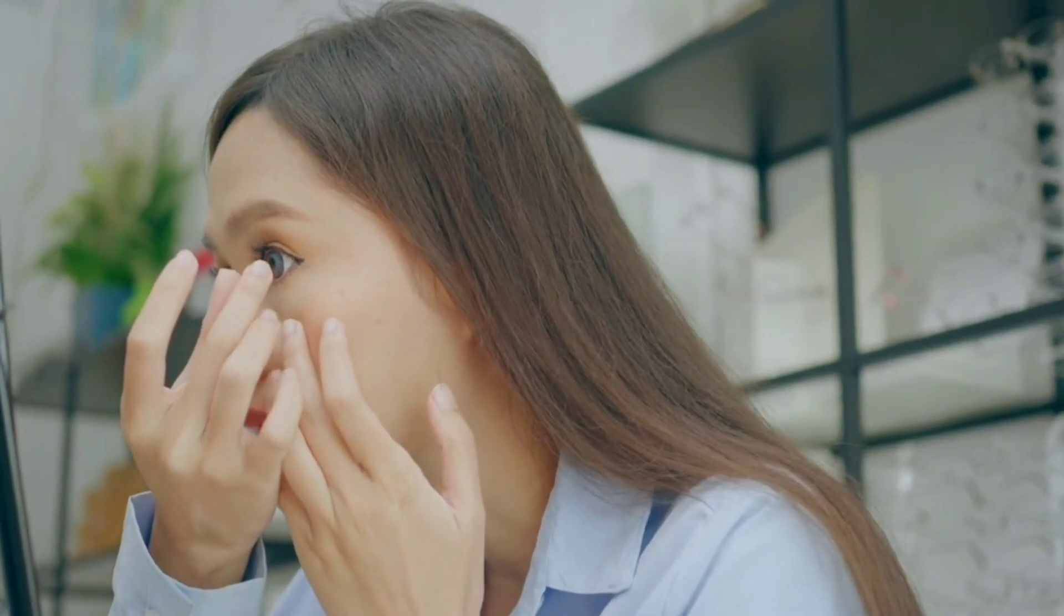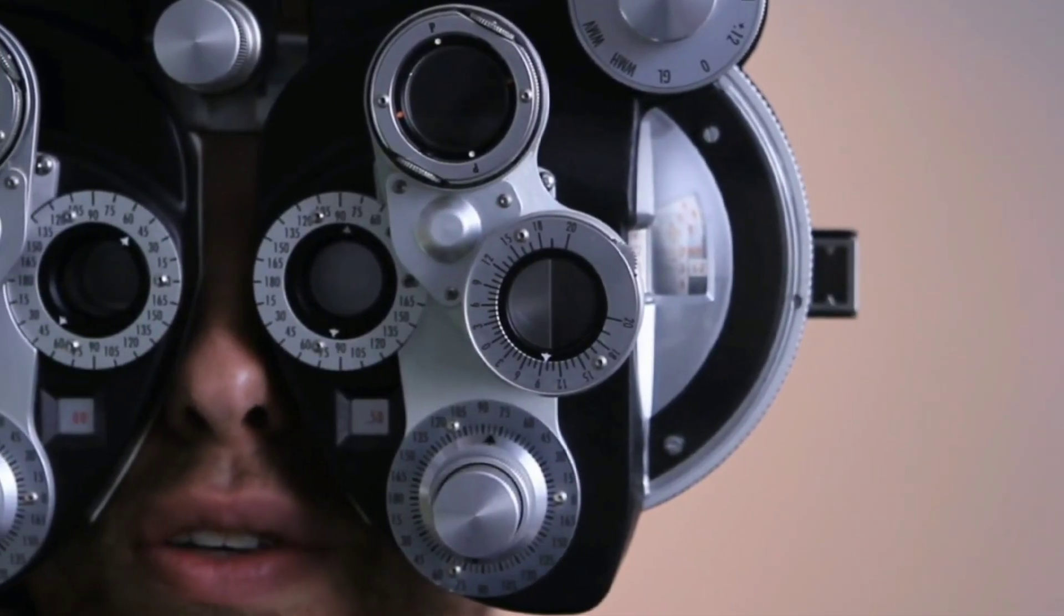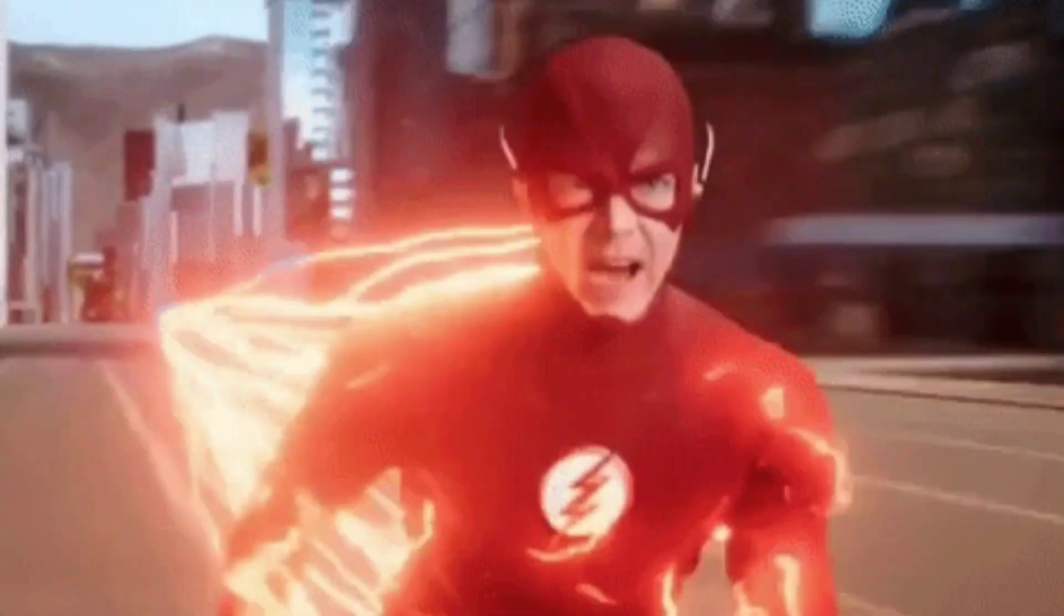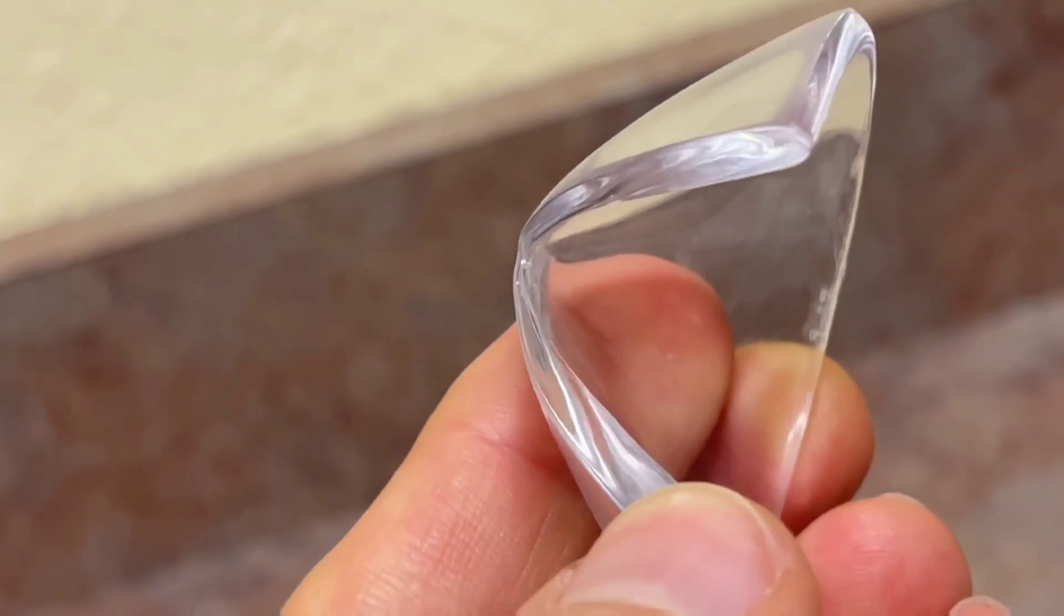Glasses or contacts can correct for the blurry vision resulting from Keratoconus, but patients may need to keep changing their prescriptions pretty rapidly as their cornea changes shape.